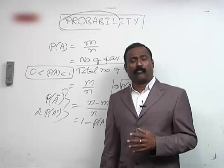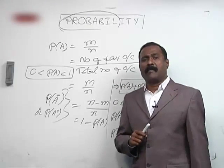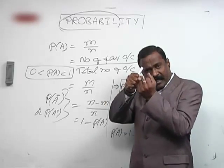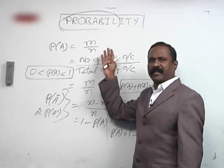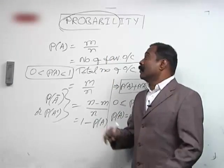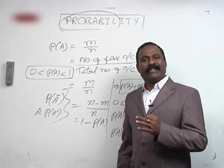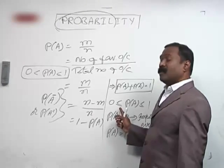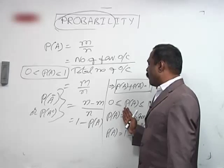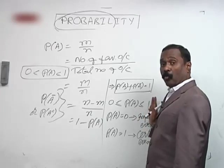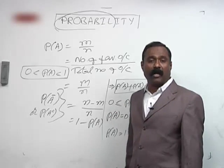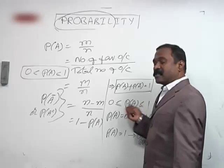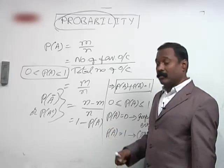According to the classical definition, you must know the total number of outcomes for whatever problem you take. From that, you pick out the number of favourable outcomes, place it in the numerator, and the total number of outcomes in the denominator — thereby getting the probability of occurrence of event A. If your answer is not lying between 0 and 1, you have gone wrong. Its value must always lie between 0 and 1.